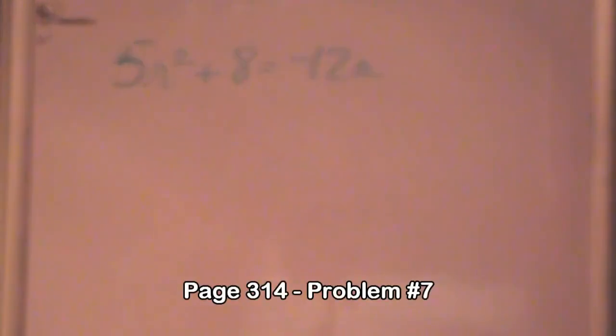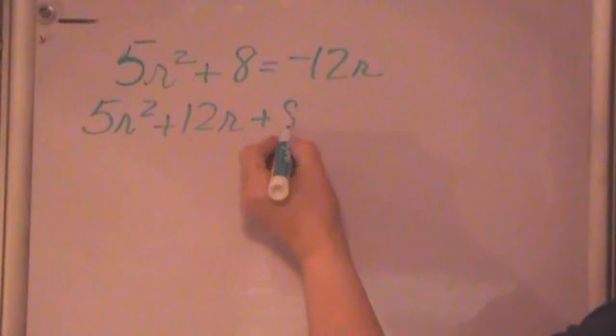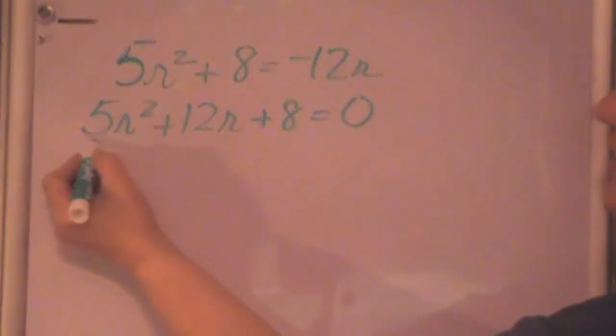Now when you have a quadratic and it's not all on the left side or not on the same side of the equation, you have to get it all on the same side of the equation, because just like when you were factoring and using the zero product rule, you have to get everything over and set it all equal to zero. So that means 5r² plus 12r, because when it comes over here it becomes positive, plus 8 equals zero. So just get everything on the left side and put them in order, the squared term, the linear term, and the constant term.